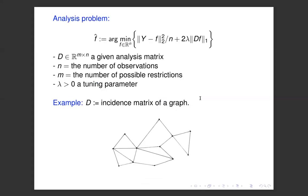We want to estimate this unknown signal, using what is called the analysis estimator. You do least squares, but you believe that certain linear combinations of the vector are small or almost zero, so you put a penalty proportional to the L1 norm of these linear combinations given by matrix D — an M times N analysis matrix — depending on the structure you believe is in the signal.